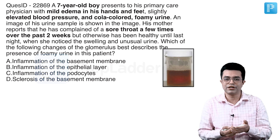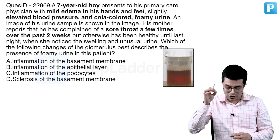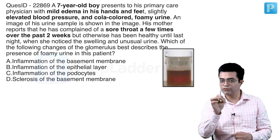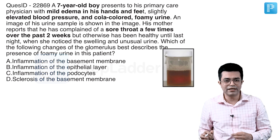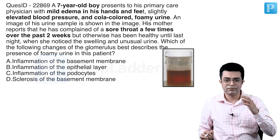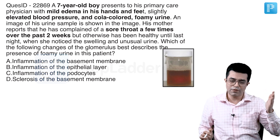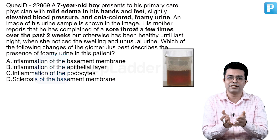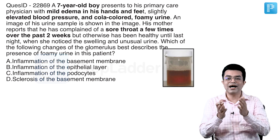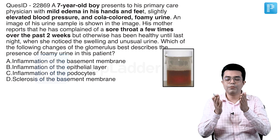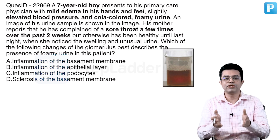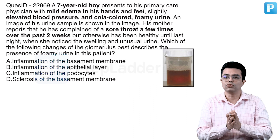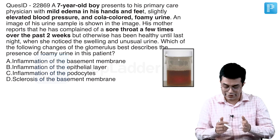So the question is asking: what is the reason for foamy urine in this patient? Cola-coloured urine is due to hematuria, while foamy urine is due to proteinuria. The question is basically asking why proteinuria occurs in post-streptococcal nephritis.